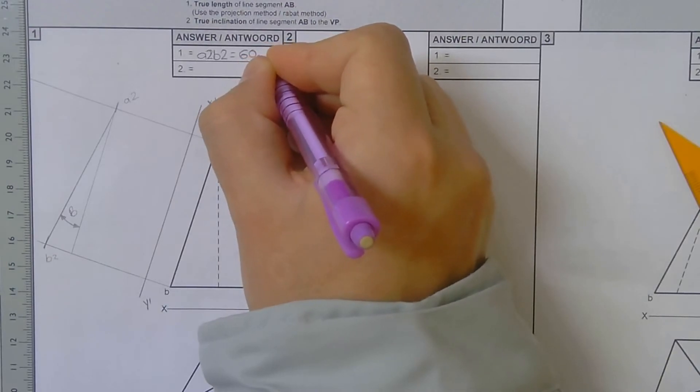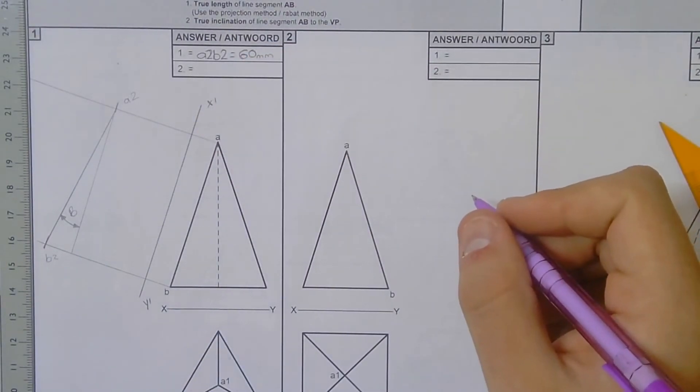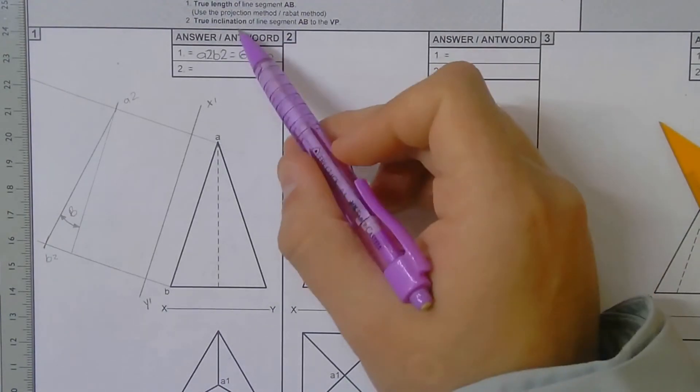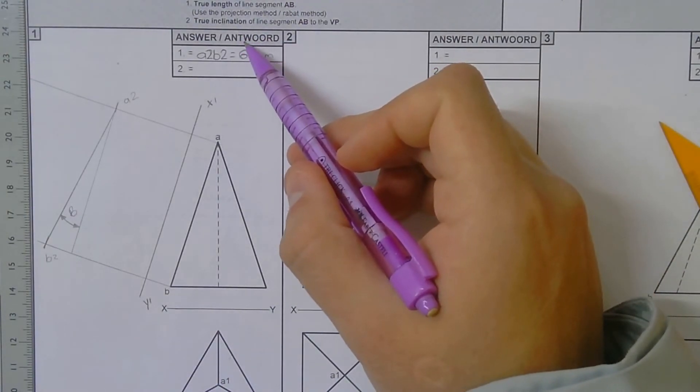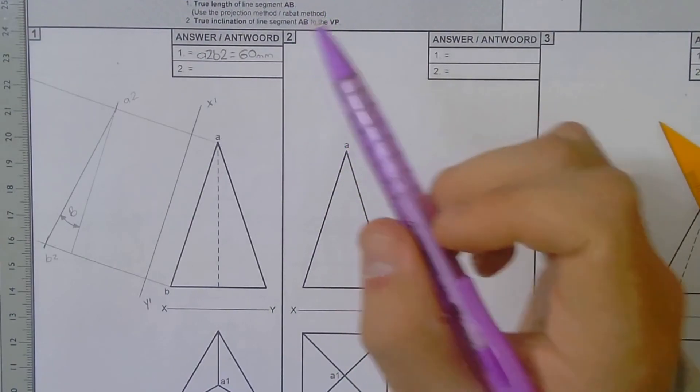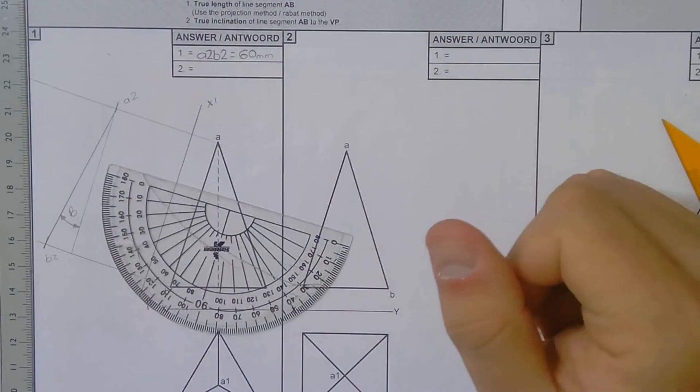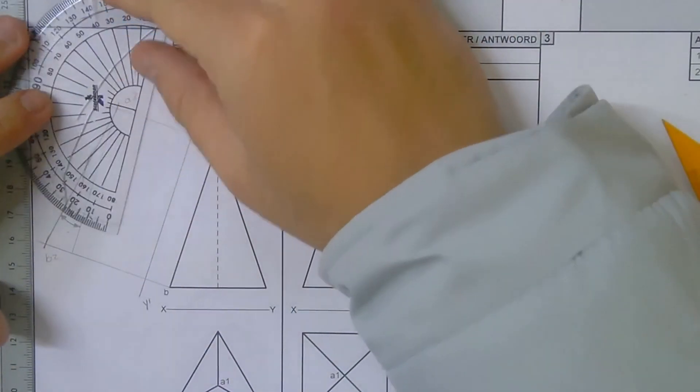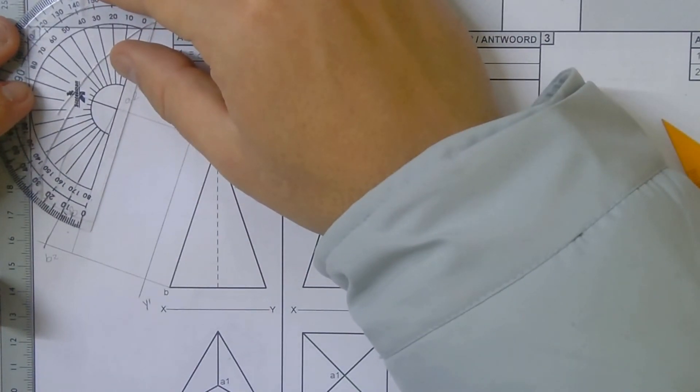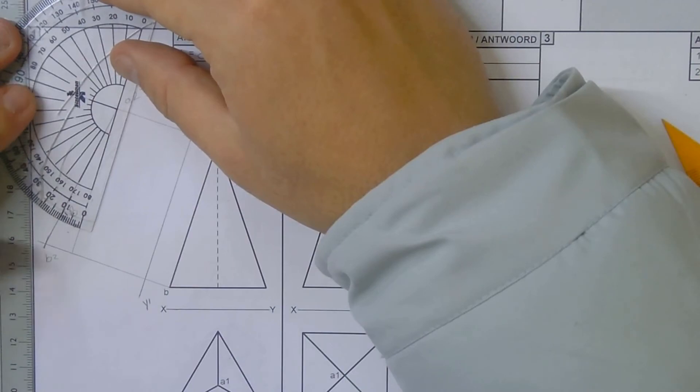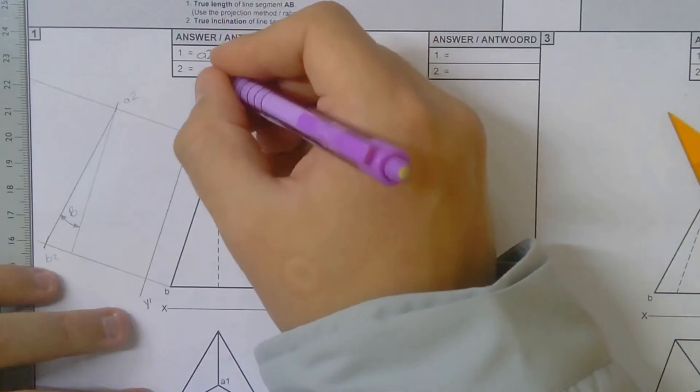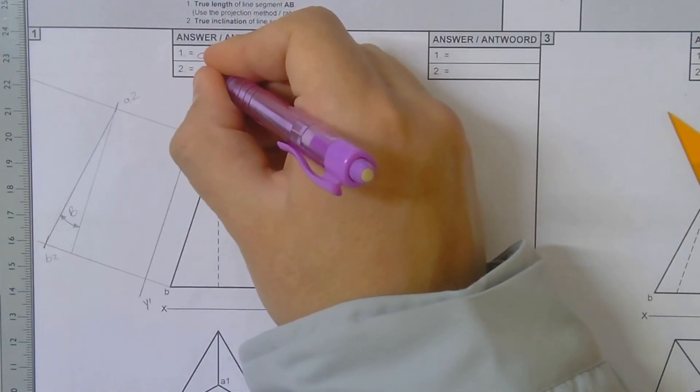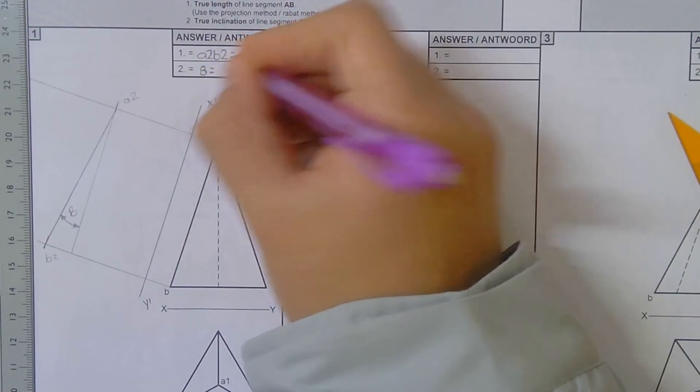But now we want to go get the true inclination, so that is an angle. So then we need our protractor, and we go and measure that, and it gives me 10. So then we go and write there B is equal to 10 degrees.